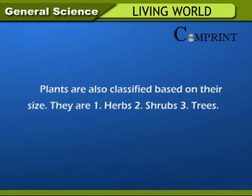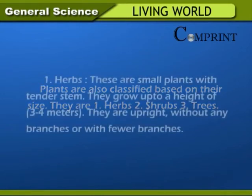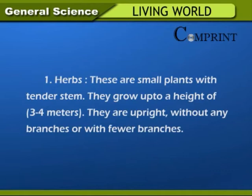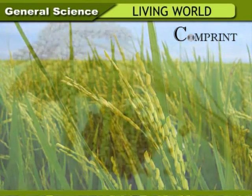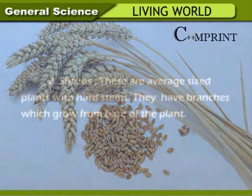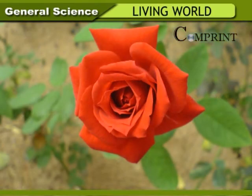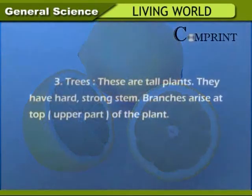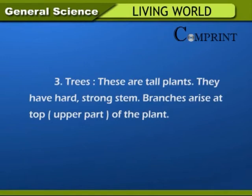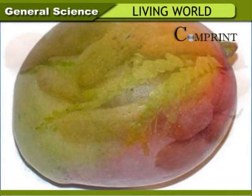Plants are also classified based on their size into: 1. Herbs — small plants with tender stem, growing up to 3 to 4 meters, upright with few or no branches; examples: Paddy, Wheat, Mustard, Brinjal, Lady's Finger. 2. Shrubs — average-sized plants with hard stem, having branches from the base; examples: Rose, Jasmine, Lemon. 3. Trees — tall plants with hard, strong stem, branches arising at the top; examples: Mango, Neem, Tamarind.